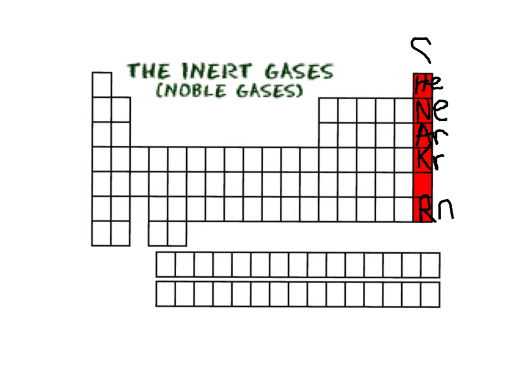Noble gases is in group 8. Can you guess how many electrons they have in their outside shell? You're right. 8 valence electrons. We call this group stable. They have a stable octet. They are the ones that everybody wants to be. They are noble. The noble gases.